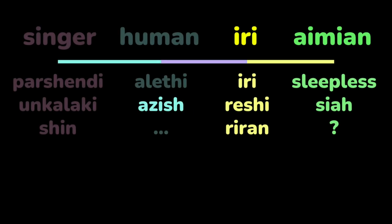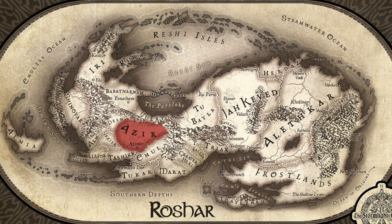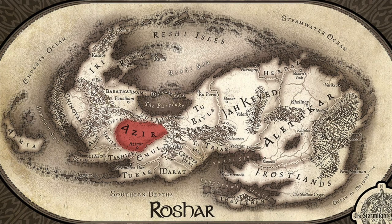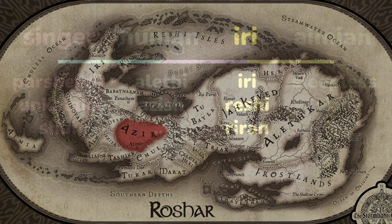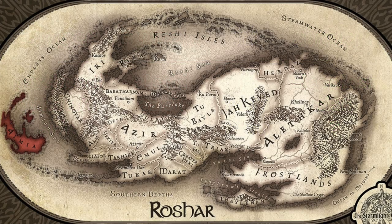Sadly, we know very little about the Makabaki, Iri, and Aymean language families. Adzish is the most spoken Makabaki language, but the family is incredibly diverse and there are many more Makabaki languages we just haven't discovered yet. It is suspected that one or more of the Makabaki languages has click consonants, but we're not totally sure. Adzish definitely has the uvular stop, which makes it distinct from the other languages we've looked at so far. Iriali, Reshi, and Riran are the only languages known in the Iri family, excepting a few creole-like dialects. We know that Reshi sounds like barking, but otherwise nothing, and we literally don't know anything about the Aymean languages.